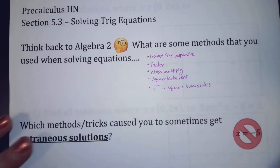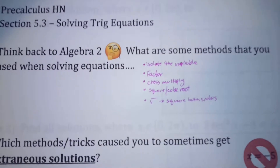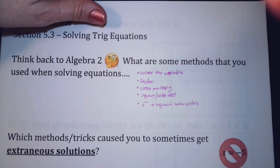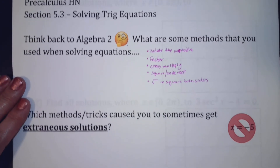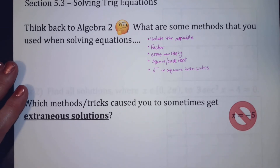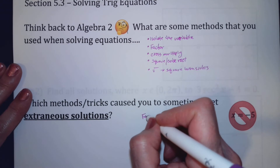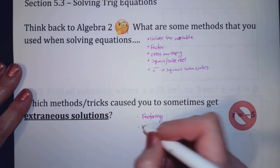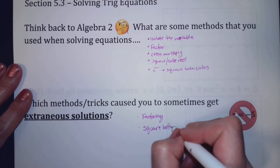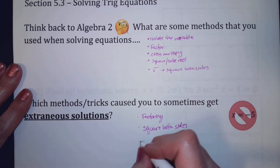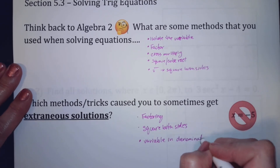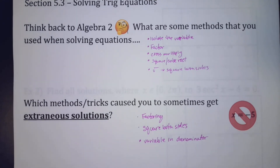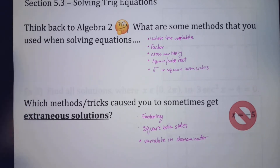There's lots of things here. So which method or tricks cause you to sometimes get extraneous solutions — solutions that seem like they're solutions but they end up not working? I would say sometimes factoring does that, definitely when you square both sides, and if you have some kind of variable in the denominator — like a fraction with a domain issue, like x minus 5 in the denominator, then x can't be negative 5.